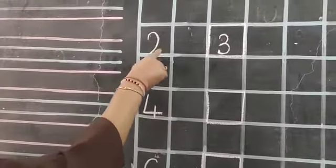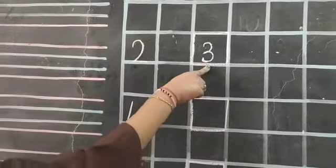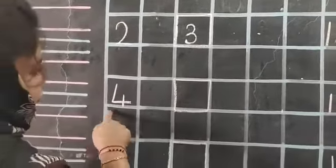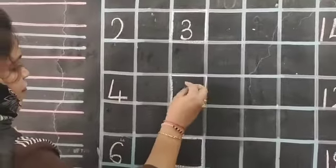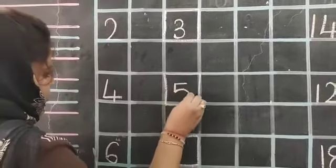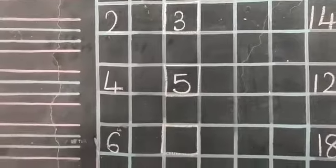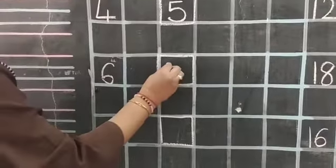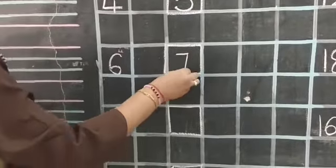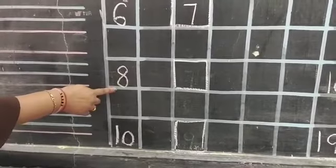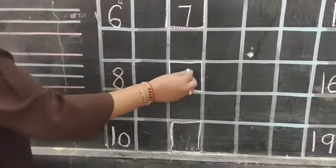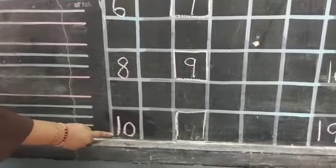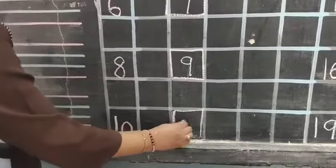After 2, which number comes? 3. After 4, which number comes? 5. Write down in the box: 5. After 6, which number comes? 7. After 8, which number comes? 9. After 10, which number comes? 11.